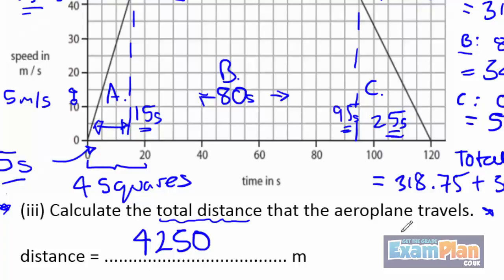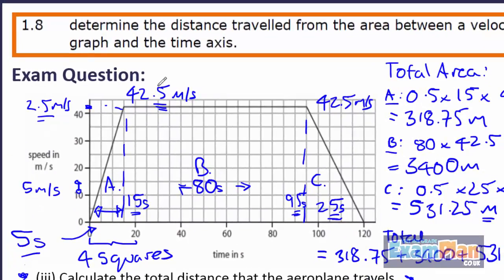The mark scheme will give a little tolerance here, just in case you have read 42 meters per second or 43 meters per second from the graph.